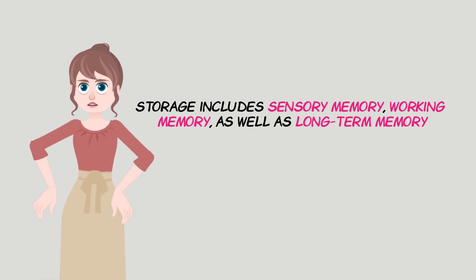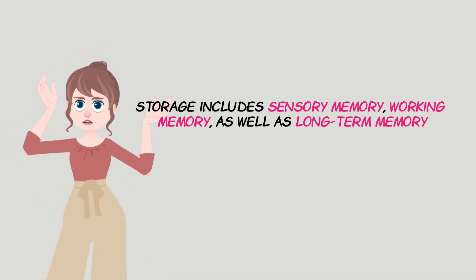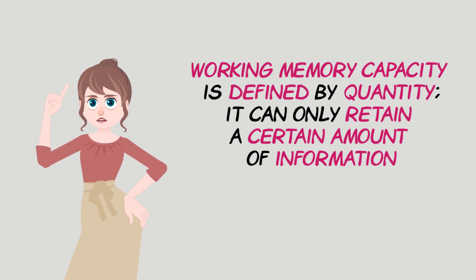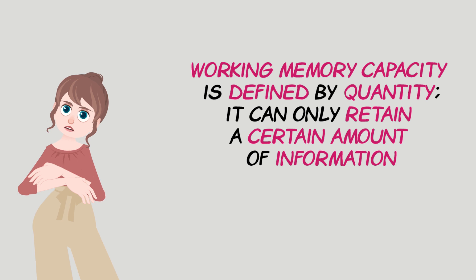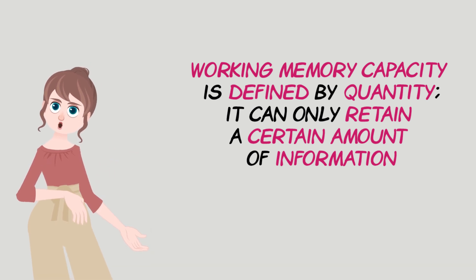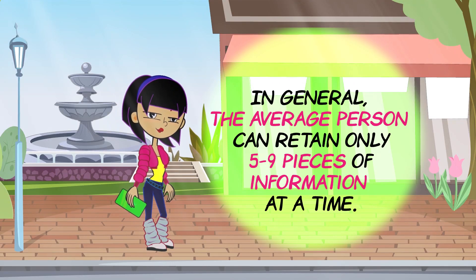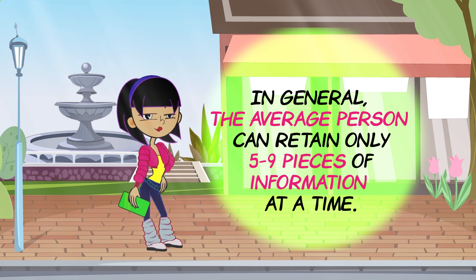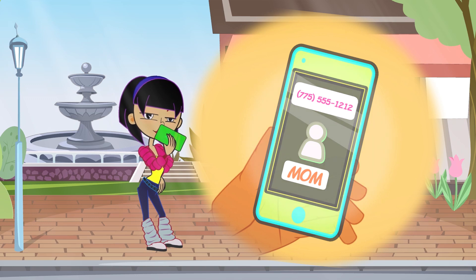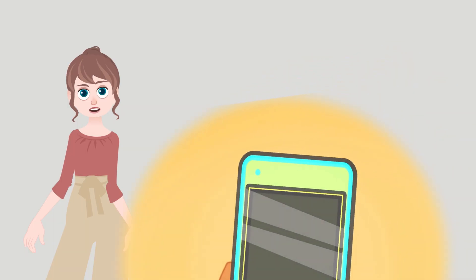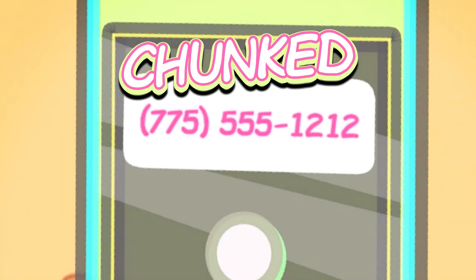Storage includes sensory memory, working memory, as well as long-term memory. Working memory capacity is defined by quantity — it can only retain a certain amount of information. In general, the average person can retain only five to nine pieces of information at a time. That's why phone numbers were initially created with seven digits — the average person can memorize seven numbers, especially if they are chunked, meaning separated, such as three numbers then four numbers.